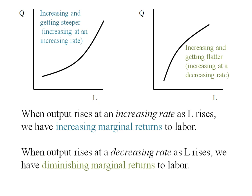If output is increasing at a decreasing rate as I'm using more labor we call that diminishing marginal returns to labor and that would be the graph on the right.